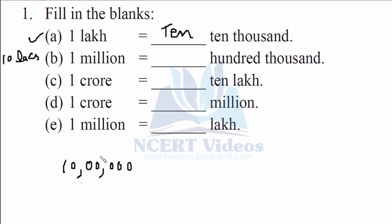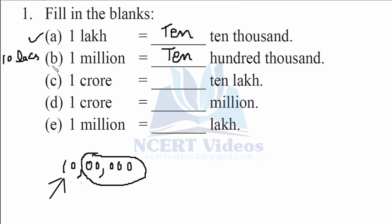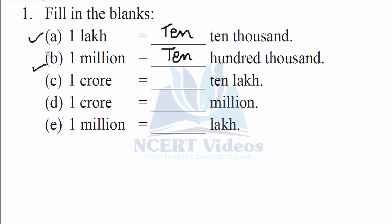10 lakhs has six zeros — that is 1,00,000. We separate it again and what we are left with is 10. Therefore we will write 10 × 1,00,000, which makes 1 million. Then comes part c: one crore.